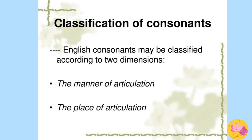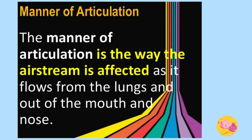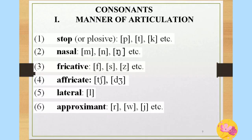Classification of consonants: English consonants may be classified according to two dimensions — the manner of articulation and the place of articulation. The manner of articulation is the way the air stream is affected as it flows from the lungs and out of the mouth and nose. According to the manner of articulation, consonants are of six types: stop, nasal, fricative, affricate, lateral, and approximant.